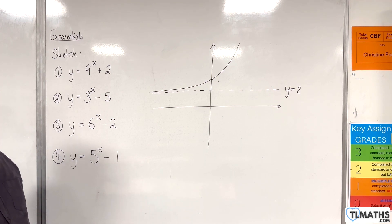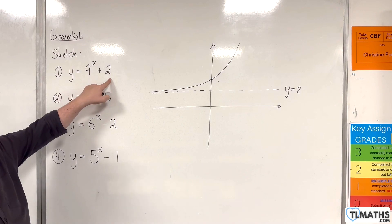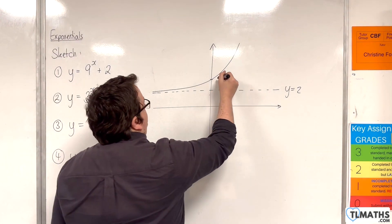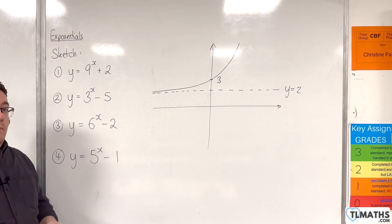And your point of interest is where it crosses the y-axis, which is when x is 0. So we'll have 9 to the 0 plus 2, which is equal to 3. And so that is our sketch for number 1.